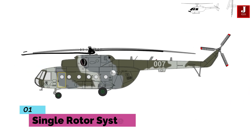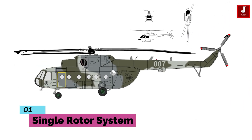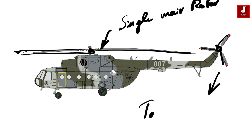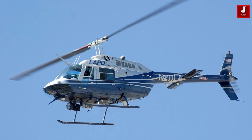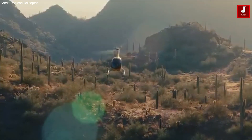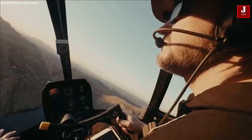First, we have the single rotor system. This is the most common configuration, featuring one main rotor and a tail rotor to counteract torque. It's efficient and simple, making it ideal for various missions. This design is prevalent in most conventional helicopters, including iconic models such as the Bell 206 and the Robinson R22. The simplicity of the single rotor system not only reduces mechanical complexity, but also enhances efficiency.